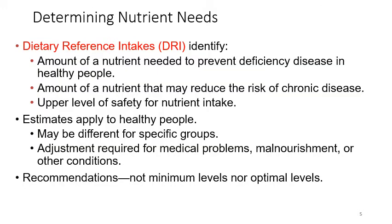Determining nutrient needs: dietary reference intakes identify 1. the amount of nutrient needed to prevent deficiency disease in healthy people, 2. the amount of nutrients that may reduce the risk of chronic disease, and 3. the upper level of safety for nutrient intake. There is a standard defined for energy, nutrients, and other dietary components. The goal is intended to be met through foods, though sometimes it can be met through supplements.